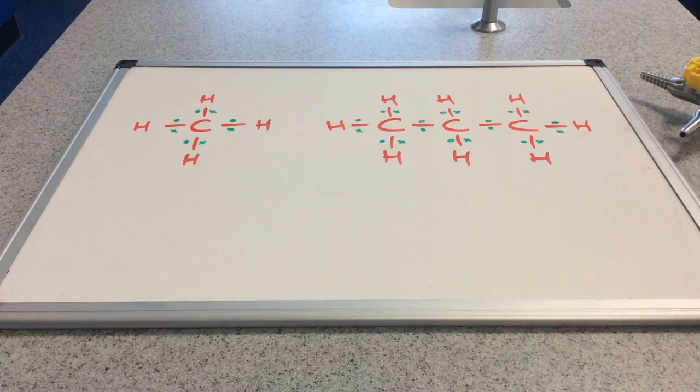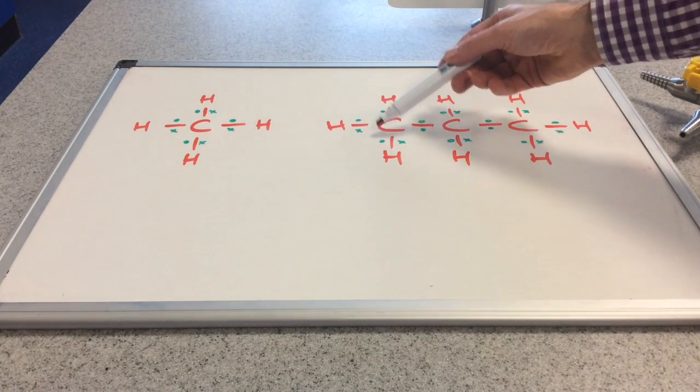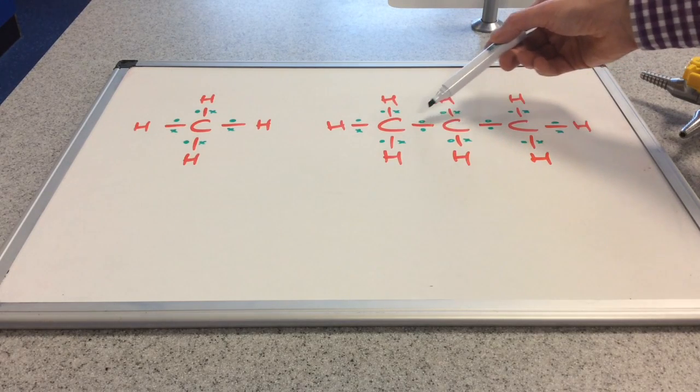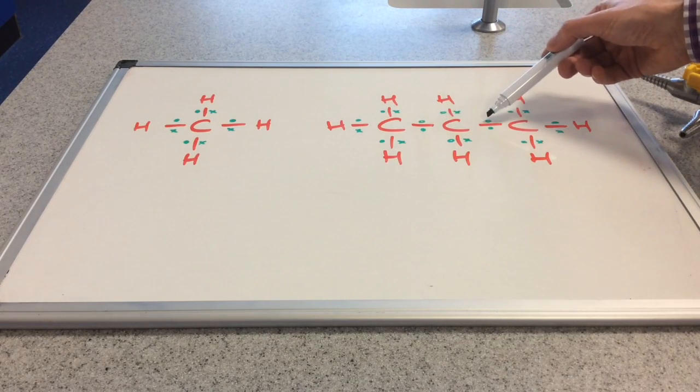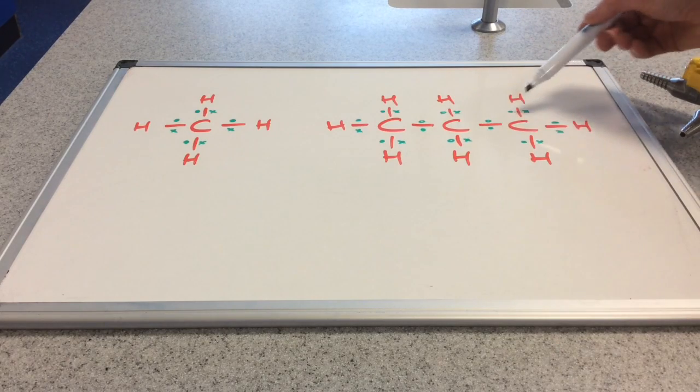And then if we just have a look at the propane molecule on the right hand side of the board, we've got this carbon here with four green dots around it, the carbon in the middle with these four open circles around it, and the carbon on the right hand side with four green dots.